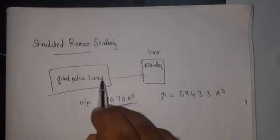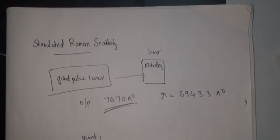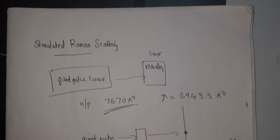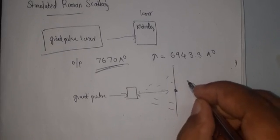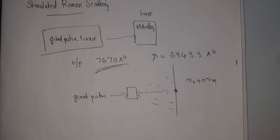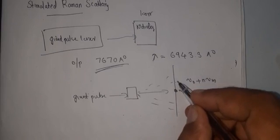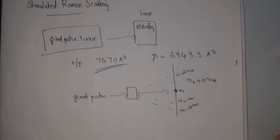In the experiment, an attempt was made to detect nitrobenzene. A laser beam was observed in one direction, corresponding to an angular difference in intensity. A Stokes and anti-Stokes pattern was produced, given by ν₀ ± n·νₘ. This gives lines at ν₀ + νₘ, ν₀ + 2νₘ, ν₀ − νₘ, and ν₀ − 2νₘ — the Stokes and anti-Stokes series.